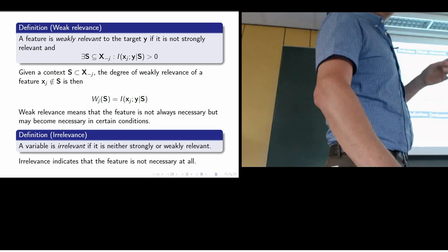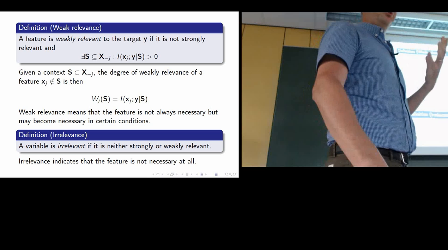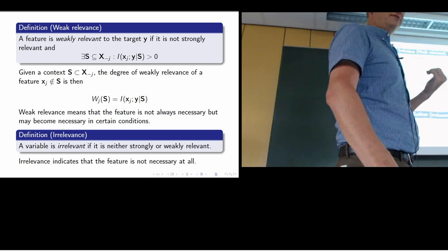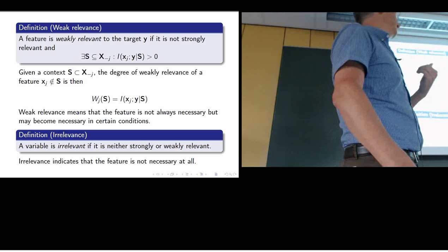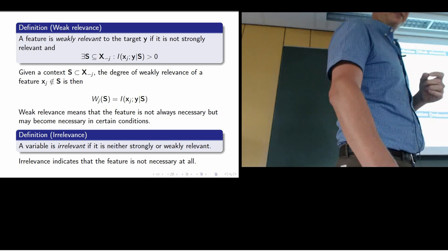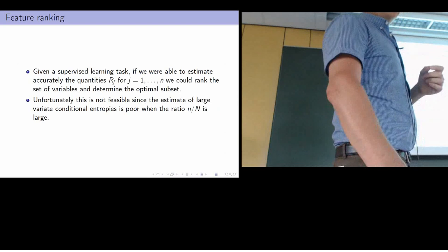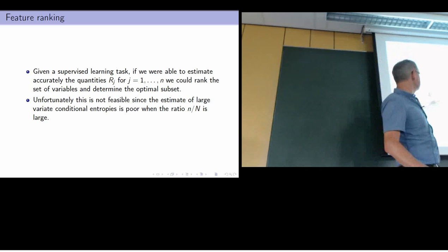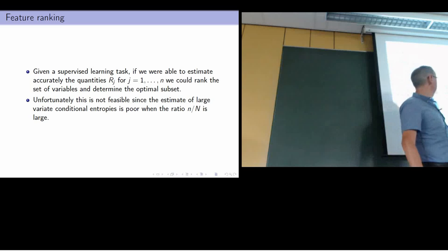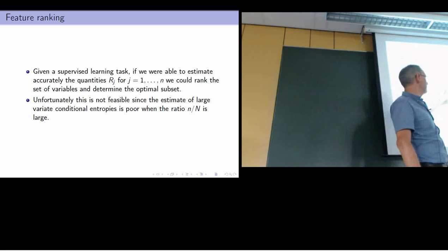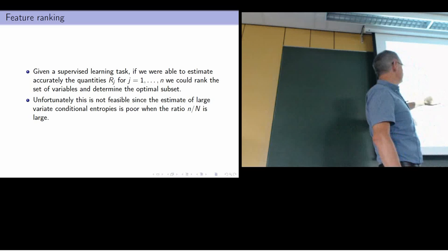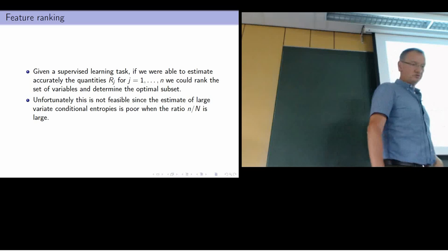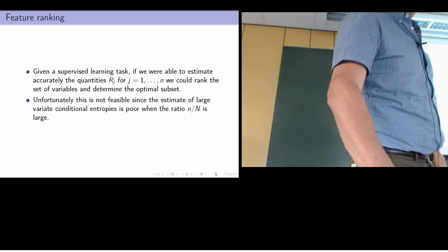From a theoretical point of view, the problem of feature selection is very well defined — it's only about measuring this quantity. The problem of feature selection is a problem of estimation: you are not able to estimate this quantity in an accurate manner. In a supervised learning task, if you could accurately estimate the relevance rj, you could rank the set of variables and determine the optimal subset. The problem is that it's not feasible when you have too few samples.